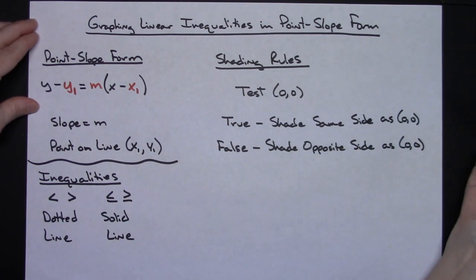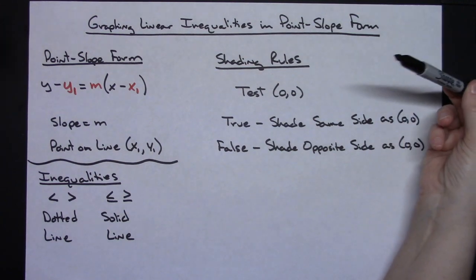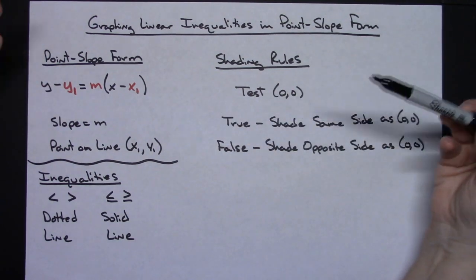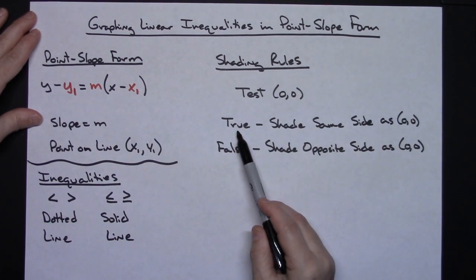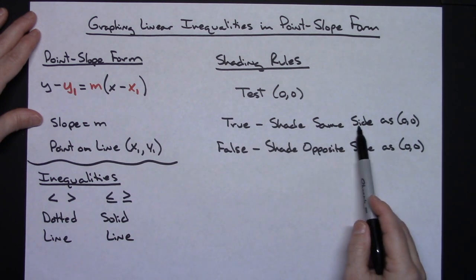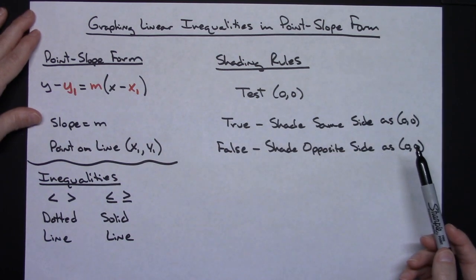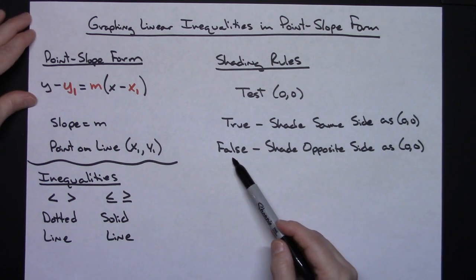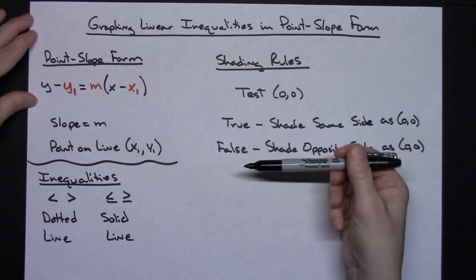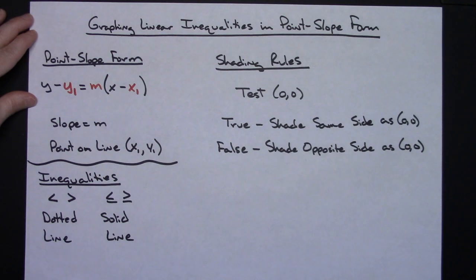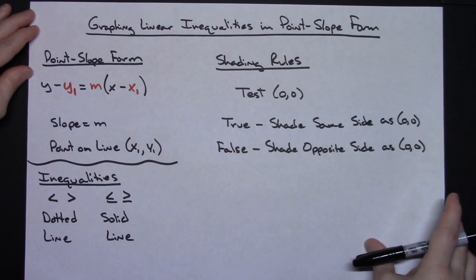There are also shading rules that go along with inequalities. Generally we test the point (0, 0) because those are easy numbers to plug in. We plug them in algebraically and see if we get a true or false statement. If we get a true statement, we shade on the same side as (0, 0), since that point is a solution. If we get a false statement, (0, 0) is not a solution, so we shade the opposite side of the line.